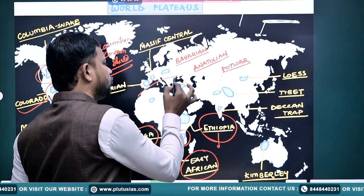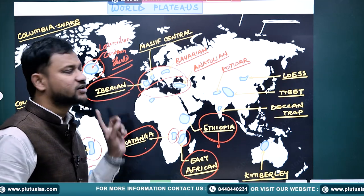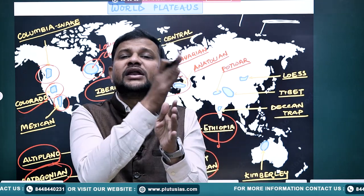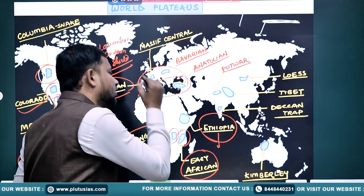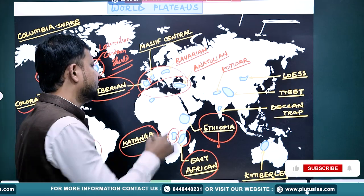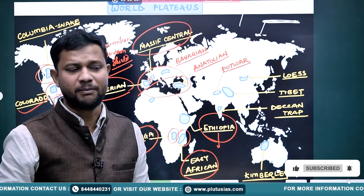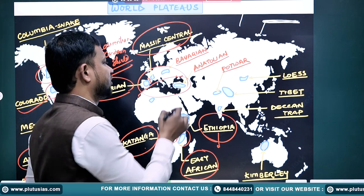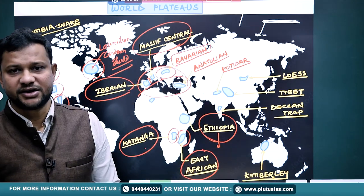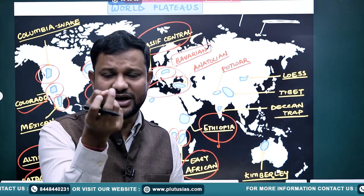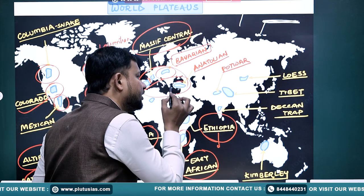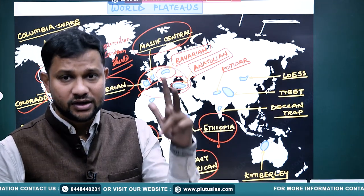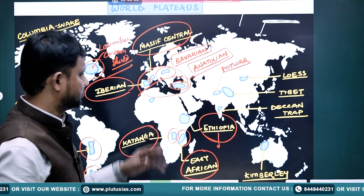In Europe, there are four major plateaus to remember. First, going west, the Iberian Plateau, which lies in Spain and Portugal — particularly Spain — to the west of the Pyrenees. To the east, you will find the Massif Central in France, which is comparatively smaller. Then there is the Bavarian Plateau in Germany. And in the eastern section, you will find the Anatolian Plateau. So the four are: Iberian, Massif Central, Bavarian, and Anatolian.